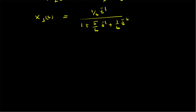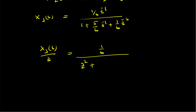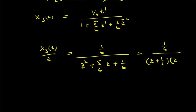We write X₃(z)/z, and multiply both numerator and denominator by z², so we get (1/6)·z in the numerator and in the denominator z² plus (5/6)z plus 1/6. This can be rewritten in factored form as (1/6) divided by (z + 1/3)(z + 1/2).